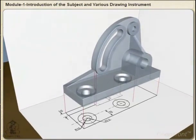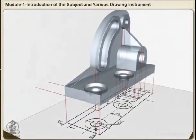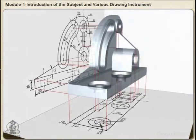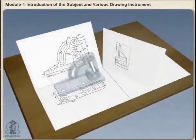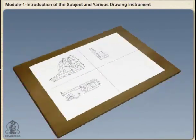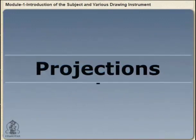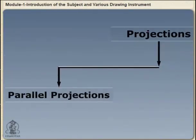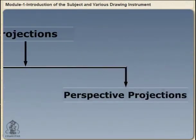The word projection means to throw forward. It is a process of plotting an object or entity on imaginary planes. Projection has two types: first is parallel projection and second is perspective projection.